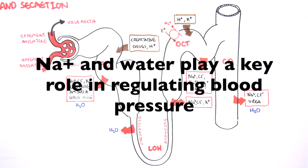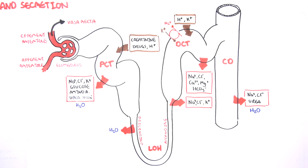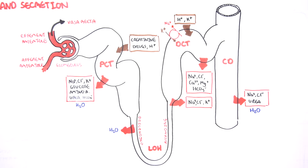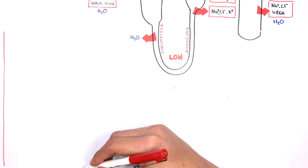It's important to note that sodium and water play a key role in regulating blood pressure. Bicarbonate and hydrogen ions play a key role in acid-base balance — maintaining the pH of our body. Let's now focus on each section of the nephron in a bit more detail, firstly focusing on the reabsorption that occurs in each area.